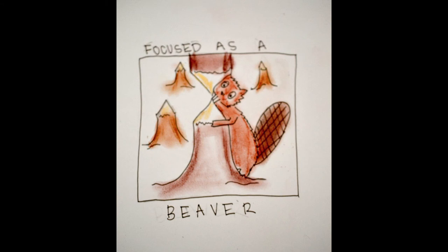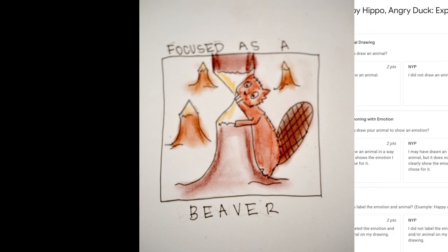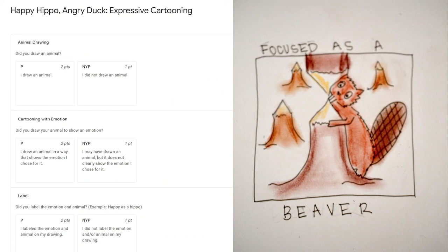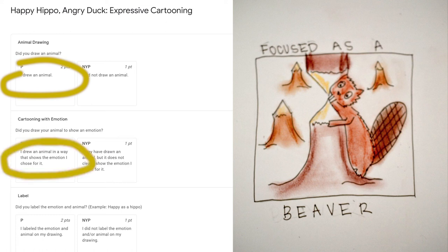Here is my final drawing. Before I turn it in, I want to check and make sure it still matches the rubric. Did I draw an animal? Yep. Did I draw the animal to show an emotion? Yep again. And did I label the emotion and animal, like happy as a hippo? Yep. Now I'm ready to turn it in.